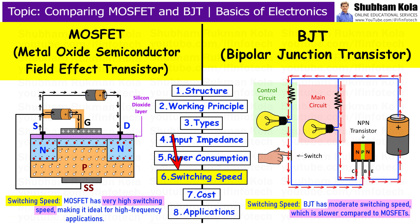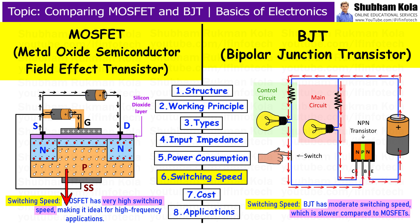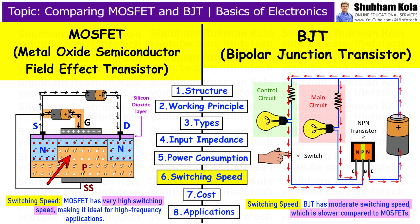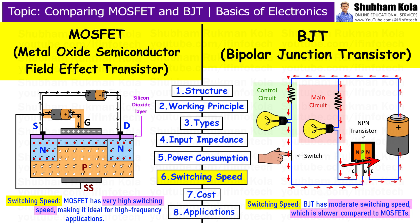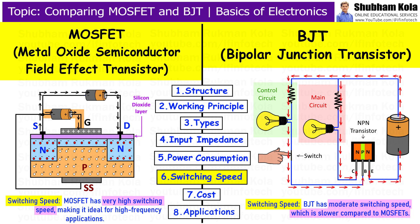Next is switching speed. When we talk about switching speed, MOSFETs and BJTs differ in their speed of operation. MOSFET has very high switching speed, making it ideal for digital circuits, fast switching applications, and high-speed devices. Because MOSFETs are voltage-driven, they can switch on and off rapidly without the need for continuous current flow. BJT has a slower switching speed compared to MOSFETs. The need for continuous current at the base and the slower movement of charge carriers in the semiconductor material slows down the switching speed of BJTs, making them less suitable for high-speed applications.